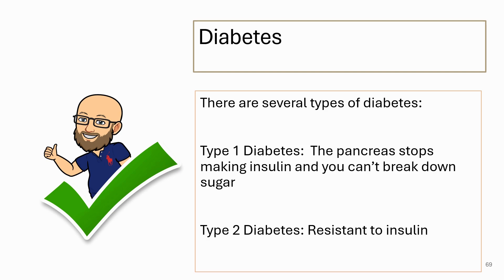Less physical activity and reduced muscle tone also lead to this, but there is also a genetic component and some other things that contribute to Type 2 diabetes. You are having a proper pancreas response, at least for a short period of time — you're just not able to effectively use the insulin, and so you really can't break down sugar properly.